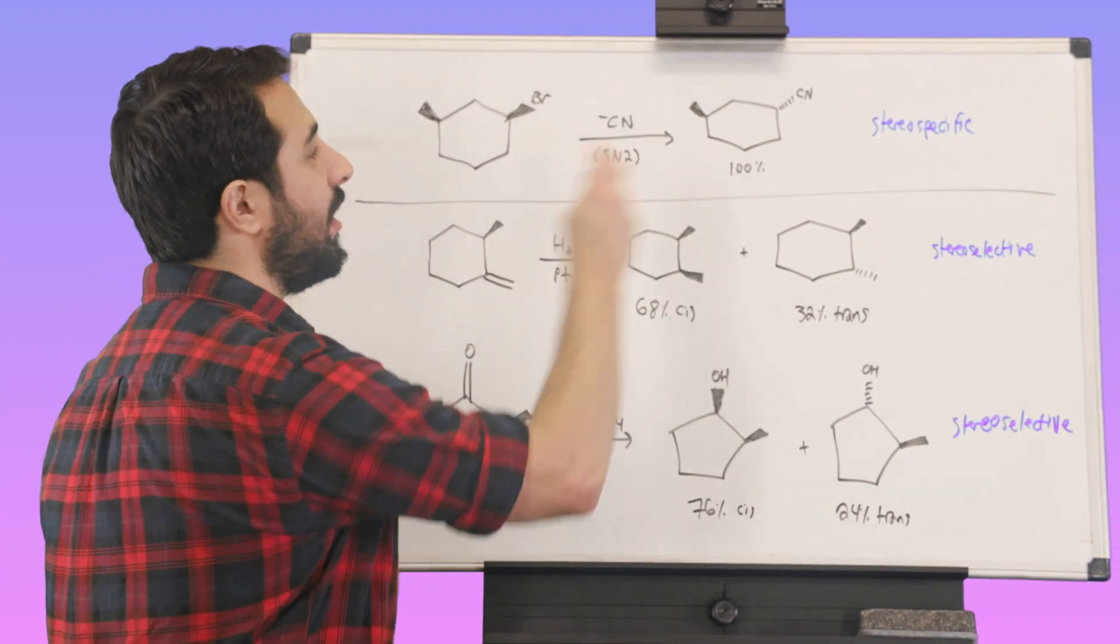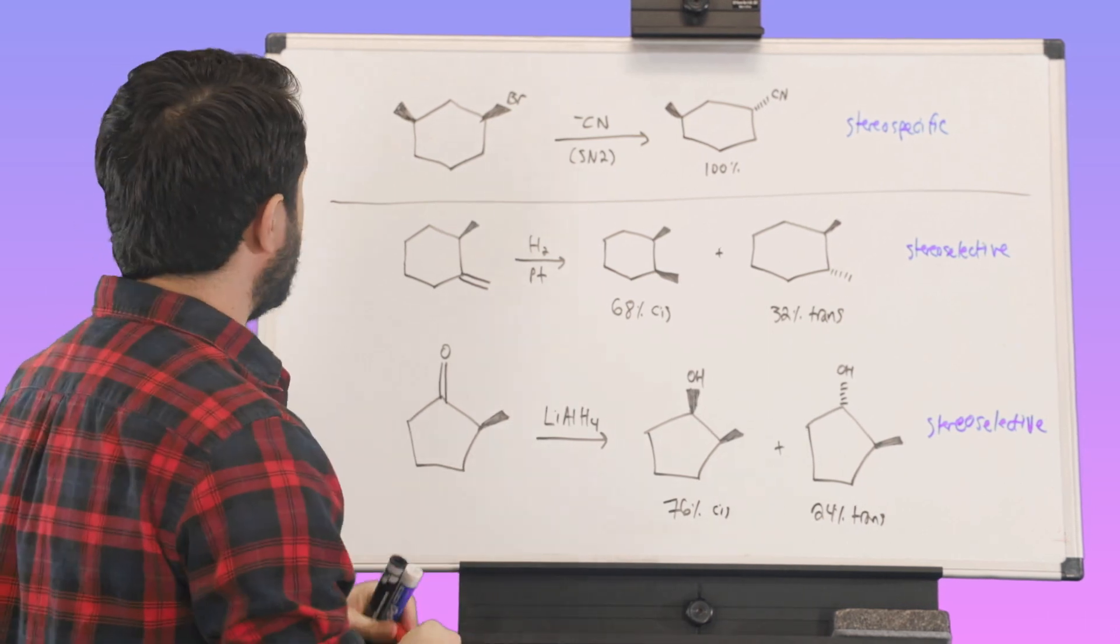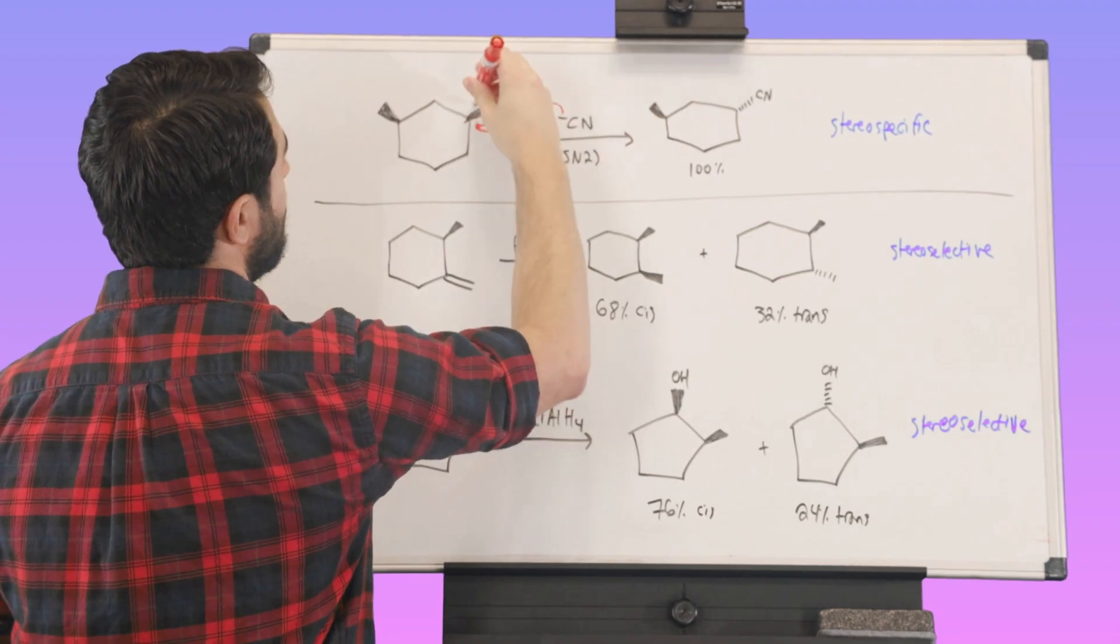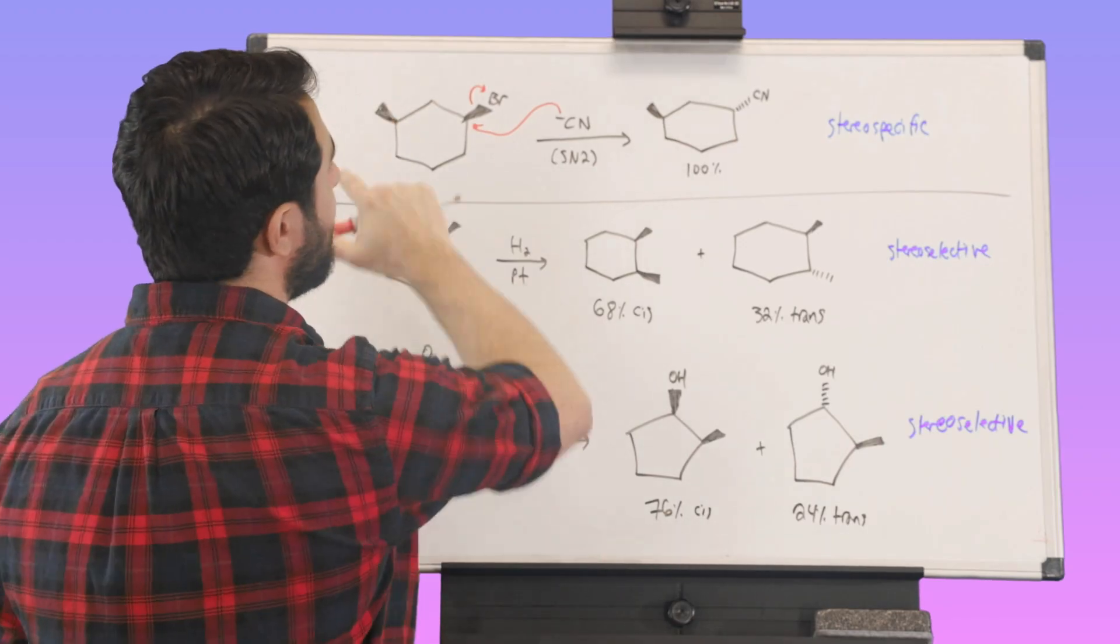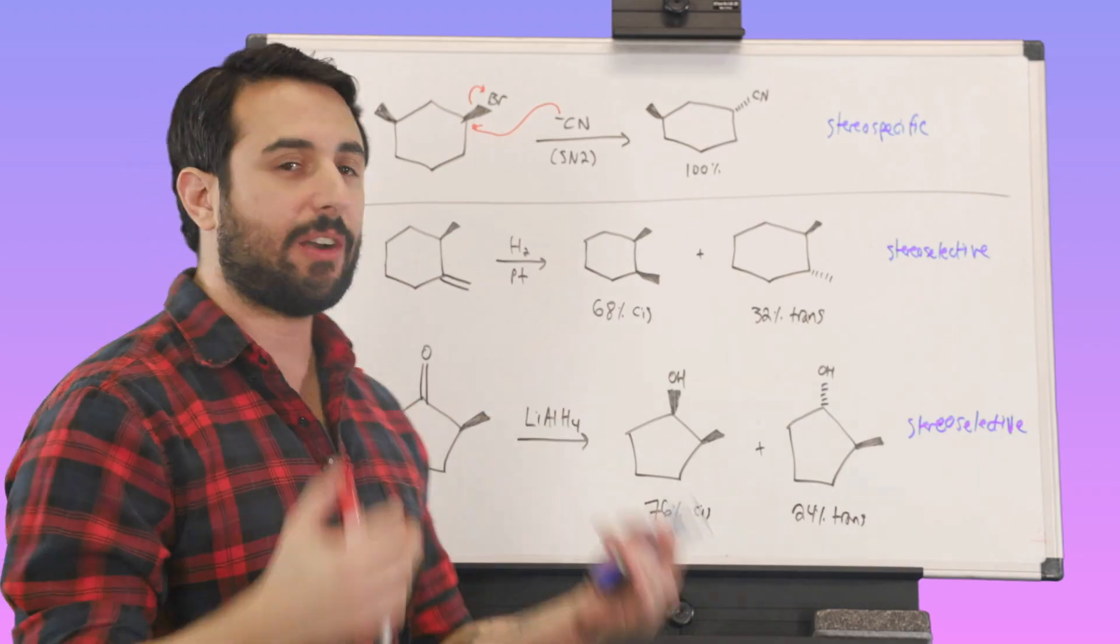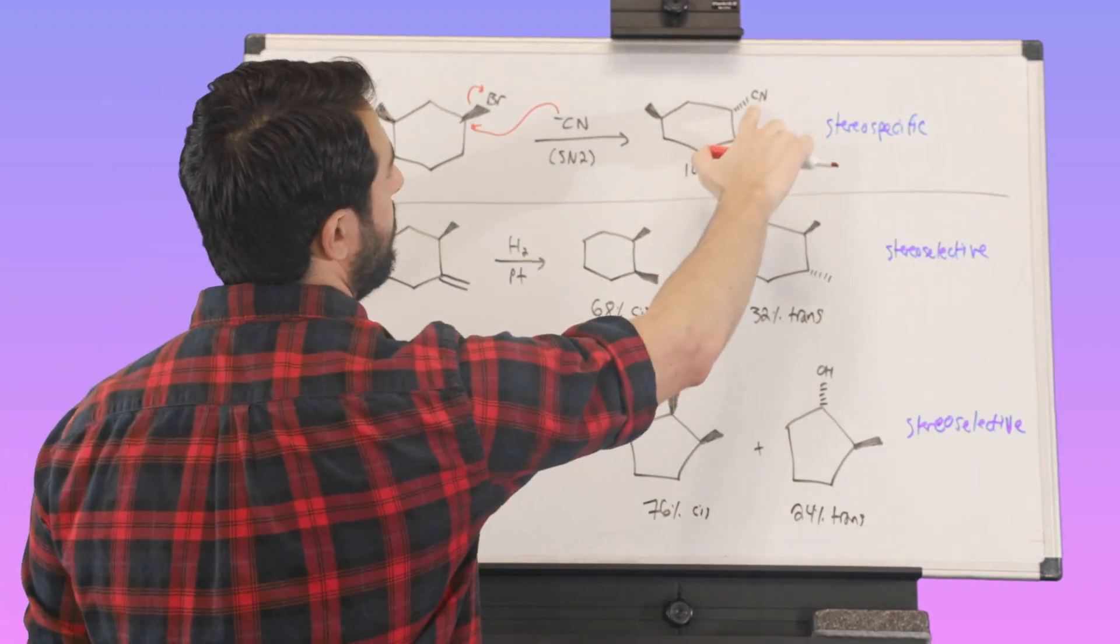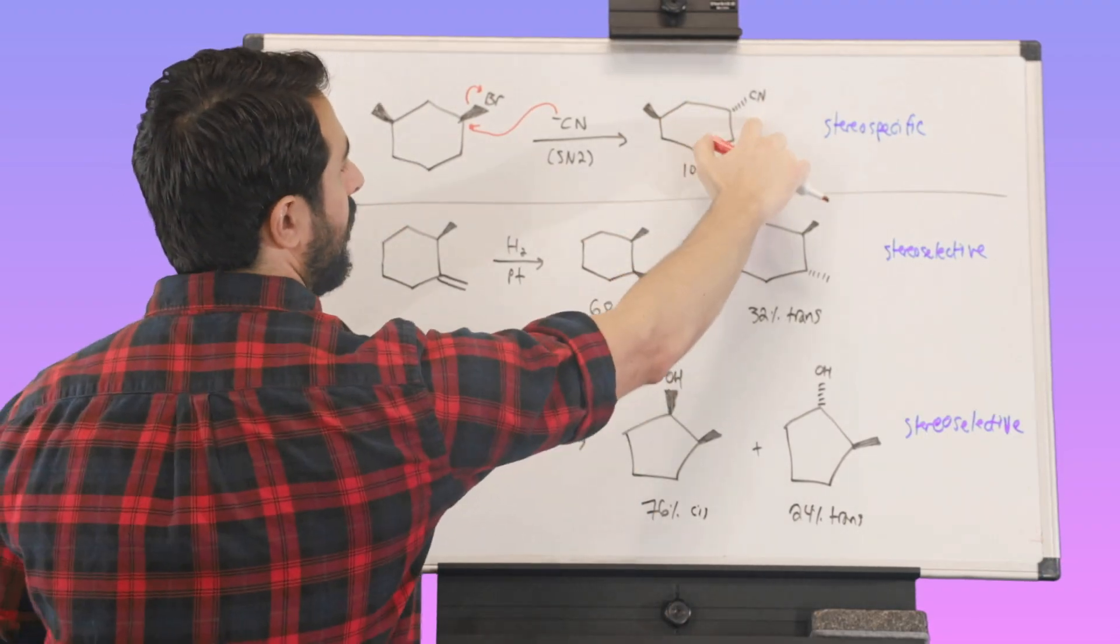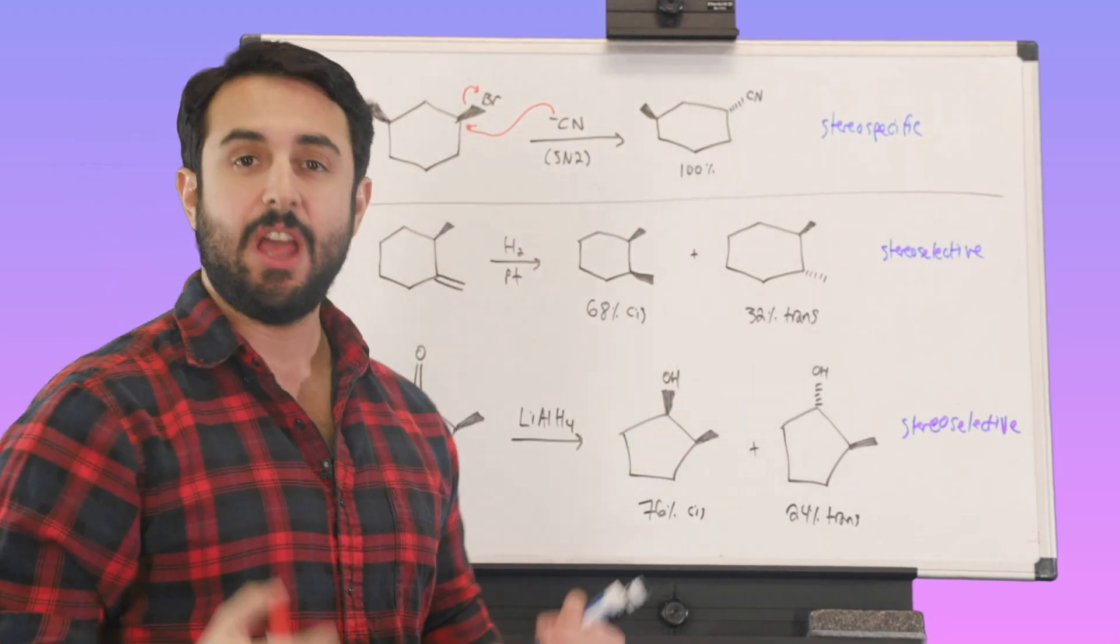So let's start with stereospecificity. We've got an SN2 reaction, a very basic reaction. We know what's going to happen here. We've got our secondary substrate, CN- is going to attack and displace the bromo group, and then we've got our CN group on there. So regular SN2, and this is stereospecific because out of possible stereochemical outcomes, we would think that the CN could be either on the dash or the wedge. It is going to be 100% on the dash. We're only going to get this product.